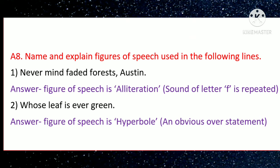Question A8: Name and explain the figures of speech used in the following lines. First line: 'Never mind the faded forest' — the figure of speech is alliteration; the sound of letter F is repeated, so alliteration is used here. Second line: 'Whose leaf is evergreen' — the figure of speech is hyperbole; it is an obvious overstatement.